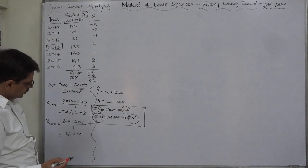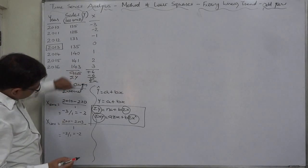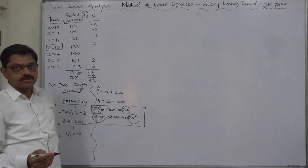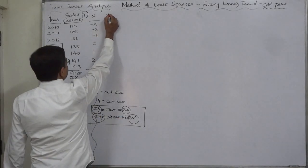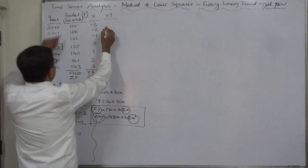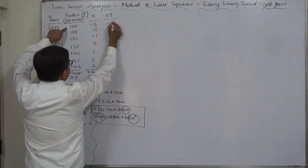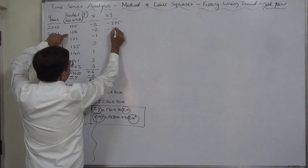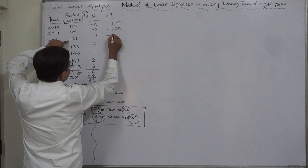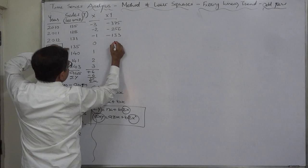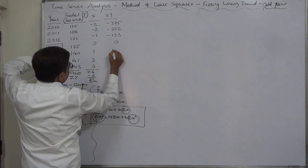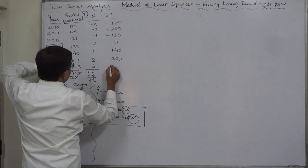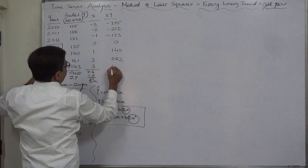We have already sigma X and sigma Y. We need two more: sigma XY and sigma X square. Let's find it. XY is nothing, X into Y. 125 minus 3, minus 375. 128 minus 2, minus 256. 133 minus 1, minus 133. Anything into 0 is 0. 140 into 1, 140. 141 into 2, 282. 143 into 3, 429.